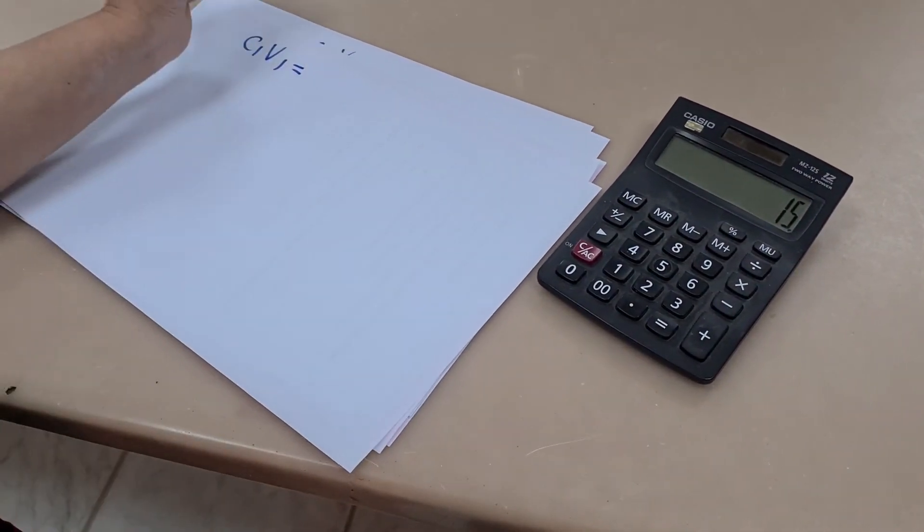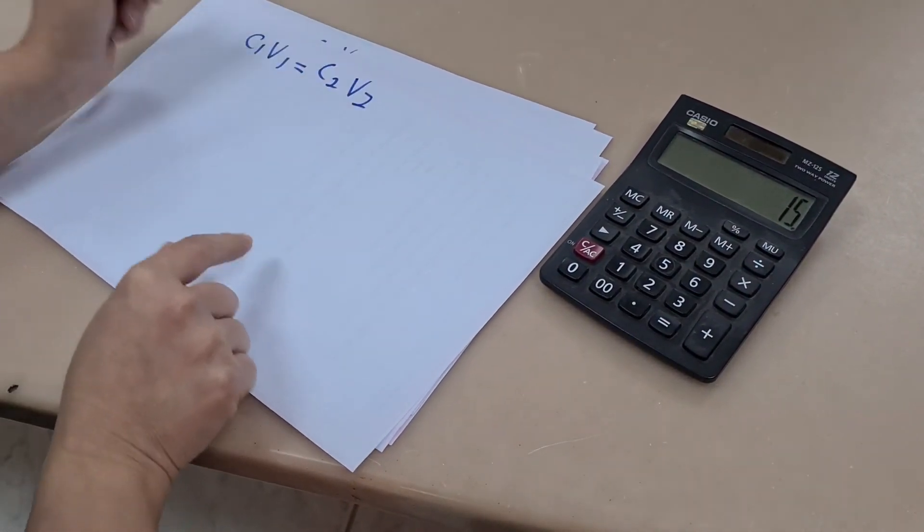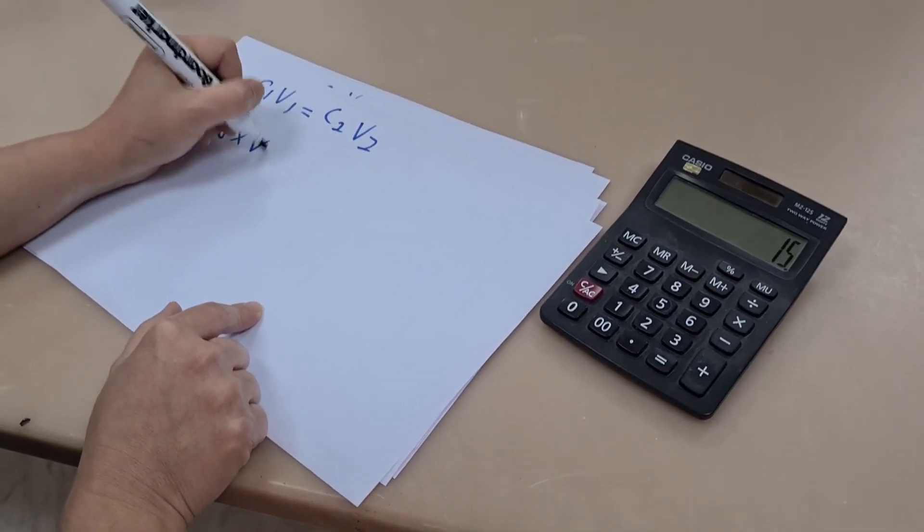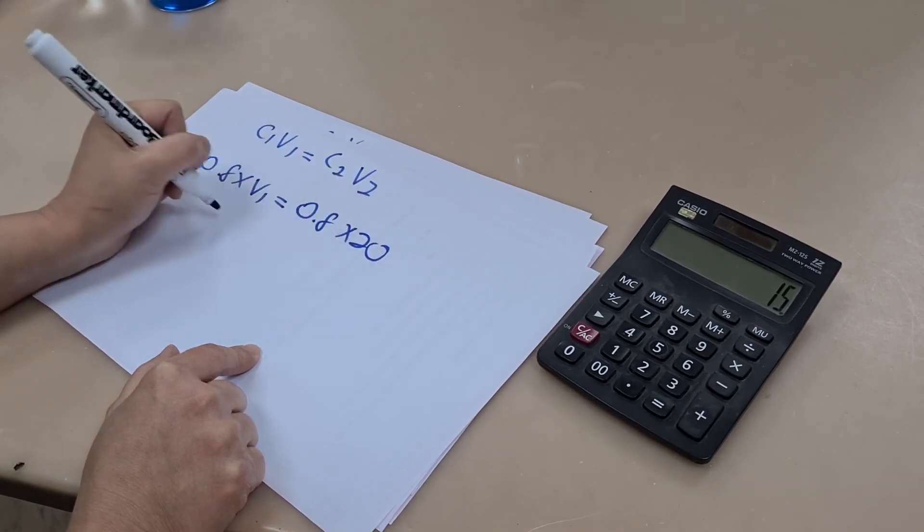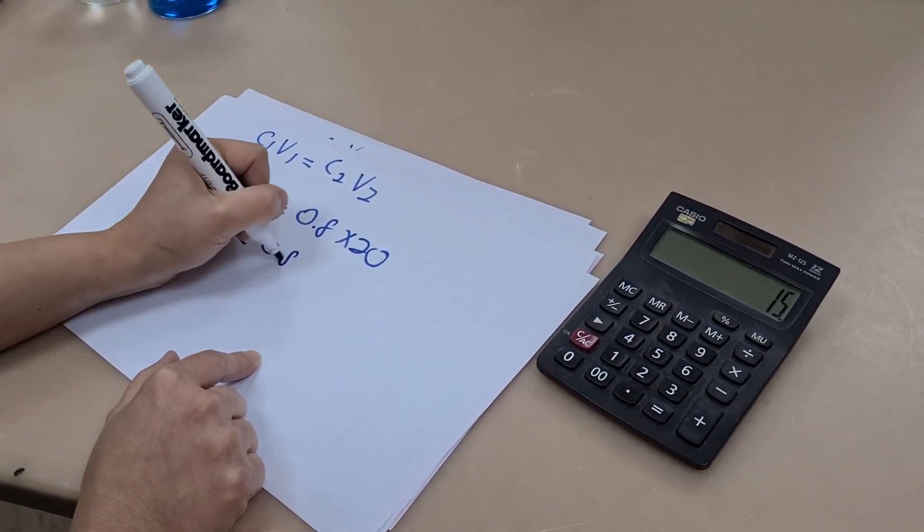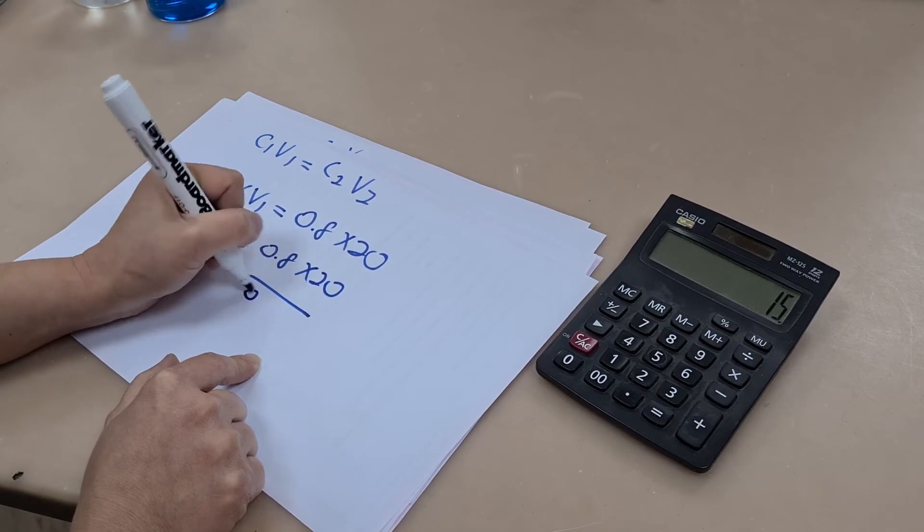And just to remember that maximum concentration we can make with a 0.8 molar solution is a 0.8 molar solution. And so that's why we've only gone up in 0.2, 0.4, 0.6 and 0.8.